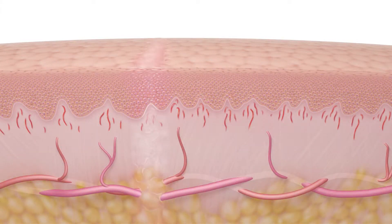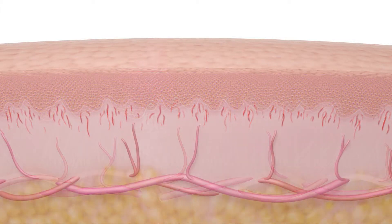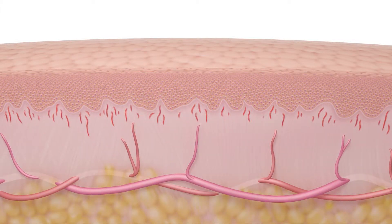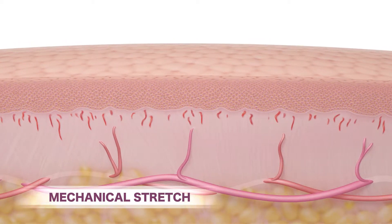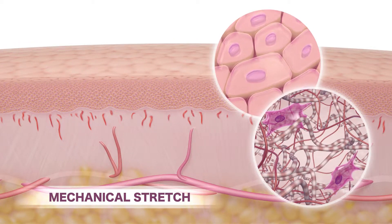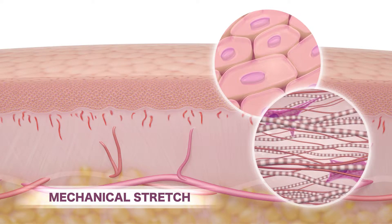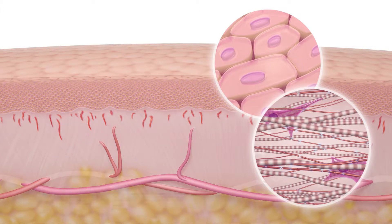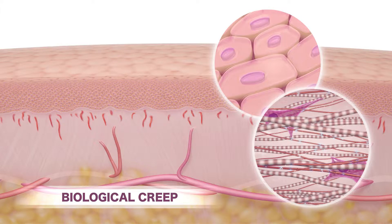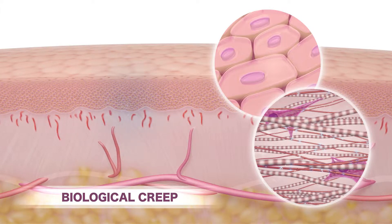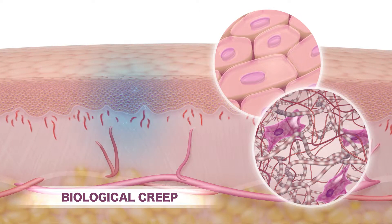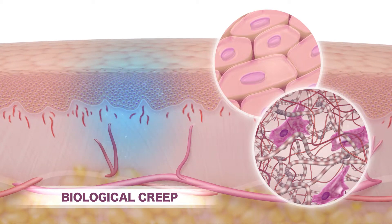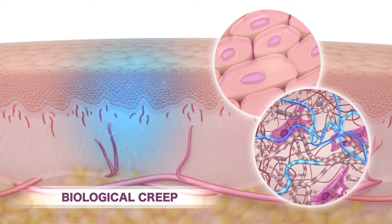When additional tension is introduced, further biomechanical processes come into play. Mechanical stretch causes the tissues to elongate; skin cells and collagen fibers straighten and align, and elastin fibers microfragment. Once the skin reaches the limits of mechanical stretch, biological creep takes over. In this natural physiological process, fibroblast numbers increase and become activated, synthesizing new collagen.